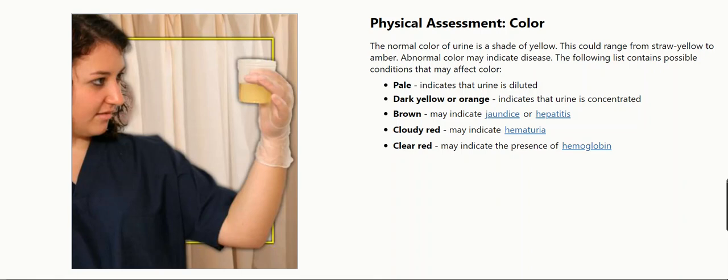Physical assessment: Color. The normal color of urine is a shade of yellow. This could range from straw yellow to amber. Abnormal color may indicate disease.